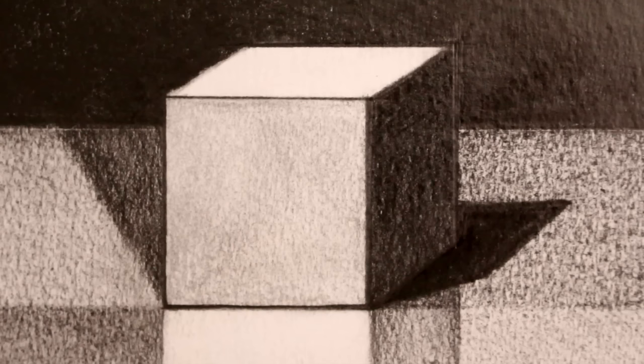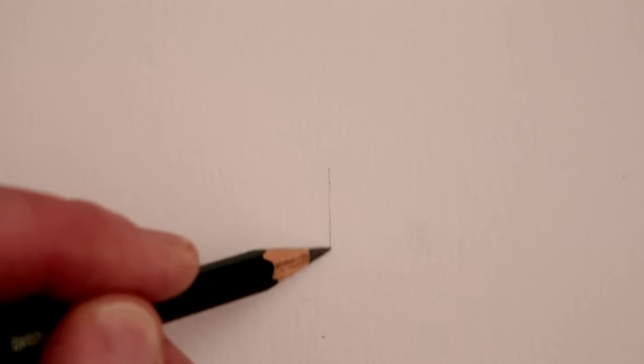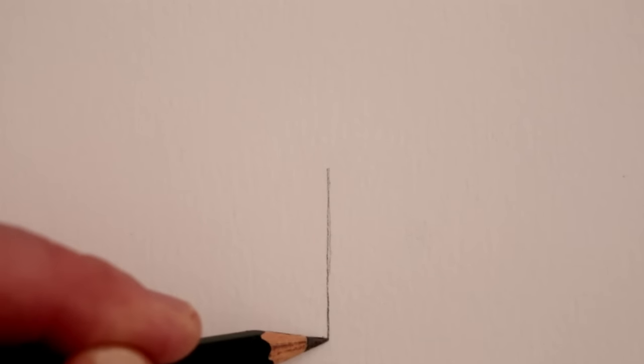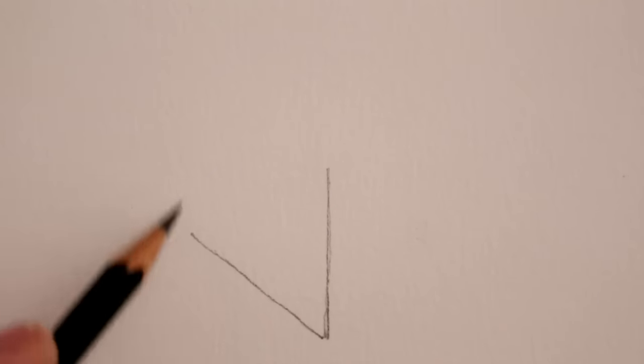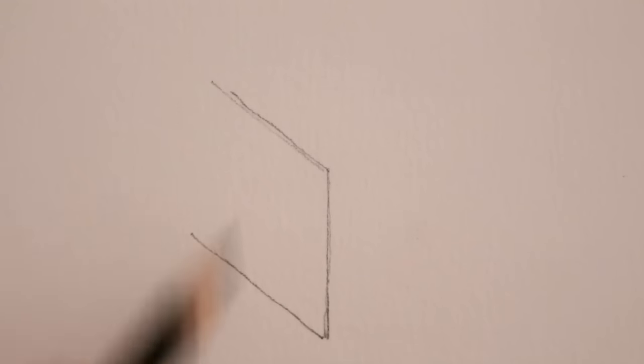So for the second cube, start again with a vertical line which is the height of the cube that you want, and then we need two diagonal lines going from the top and the bottom of this line and both of them are parallel again. Parallel means lines which don't get nearer or further away from each other.